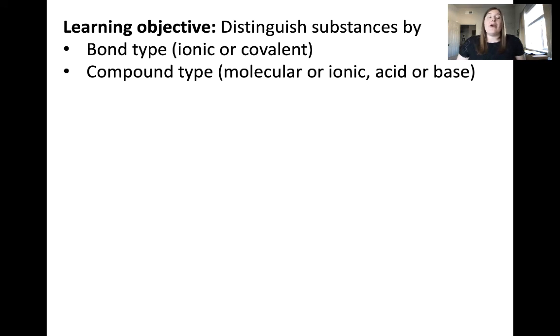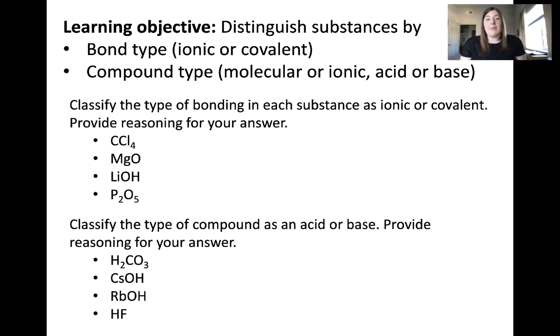Hopefully these examples have helped you distinguish between bond type within a compound and compound type. Here are some example problems that you should do. For the first set of compounds, classify the type of bonding in the compound as either ionic or covalent. For the second set of compounds, classify these compounds as either acids or bases. In both cases, provide some reasoning for your answer to convince yourself that you are meeting this learning objective to be able to distinguish these different substances. Good luck with the problems, and I'll see you in the next video.